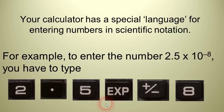So, for example, on this calculator, and I just used a Casio as an example, you're going to type in 2.5 and then instead of hitting times 10, you're going to hit EXP.